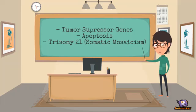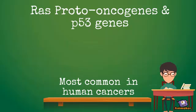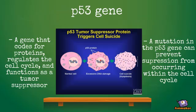Apoptosis is programmed cell death that occurs when the cancerous cell is too damaged to be fixed. Mutations in the P53 gene and the RAS proto-oncogene are most common in cancers. P53 genes are genes that code for proteins, regulate the cell cycle, and function as tumor suppressors. A mutation in this gene can prevent suppression from occurring within the cell cycle.